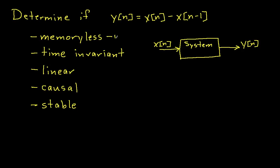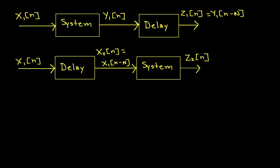The next question is whether or not the system is time-invariant. To determine that, we look at the following setup: we take an input, run it through the system, and then delay it. We also take that same input, delay it first, and then run it through the system. If the delayed output of the system is equal to the system operating on the delayed input, then the system is time-invariant.